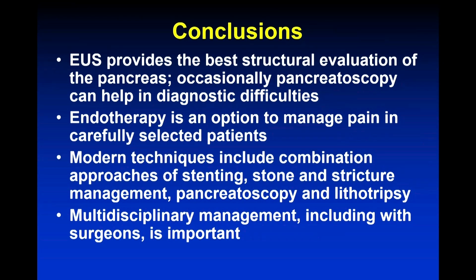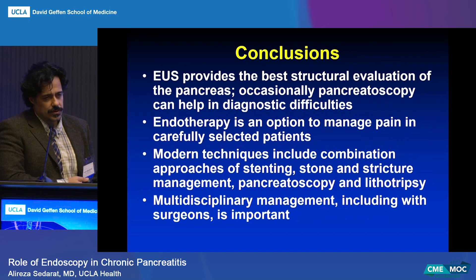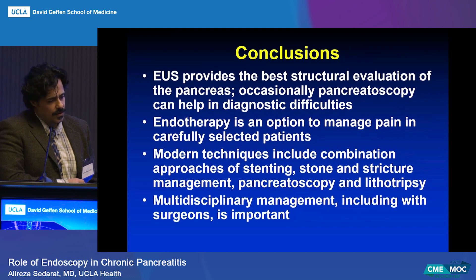Just some conclusions: EUS gives you really good structural evaluation of the pancreas and can often diagnose subtle chronic pancreatitis. Pancreatoscopy is occasionally useful when you can't tell the difference between chronic pancreatitis and a main duct IPMN. Endotherapy is an option to manage pain in carefully selected patients, and we have a lot of techniques — usually in combination — for improving ductal drainage and relieving ductal hypertension, which is an important but not the only pathophysiology in painful chronic pancreatitis. And as always, if you're unsure, ask a friend. Thank you very much.